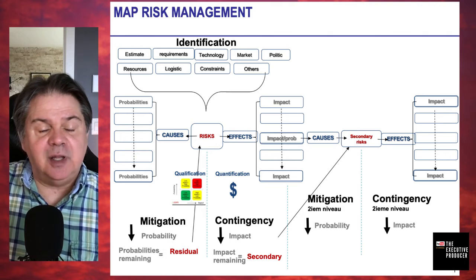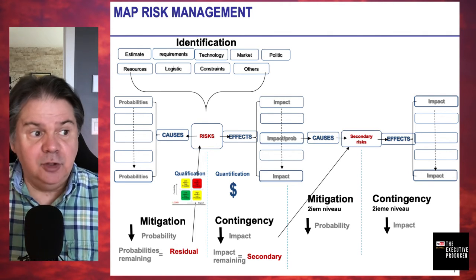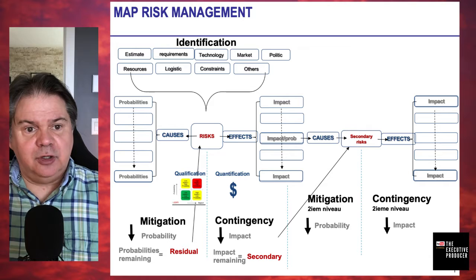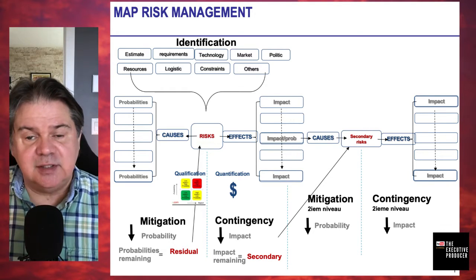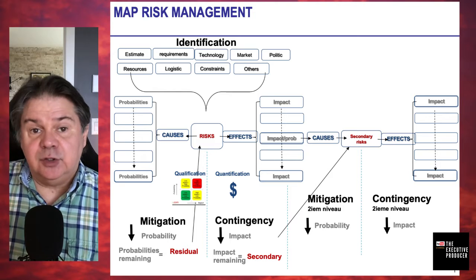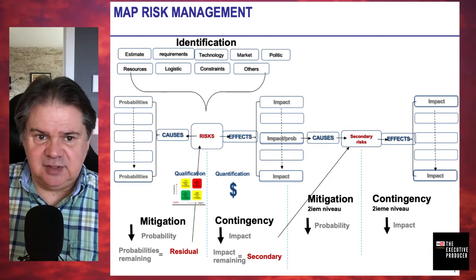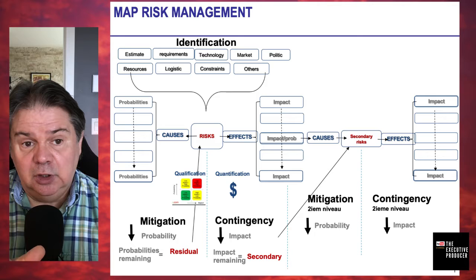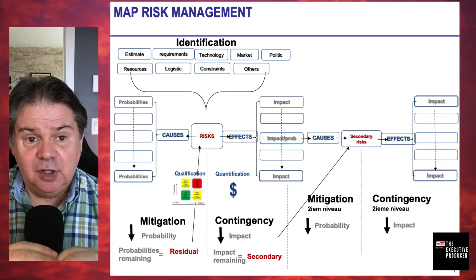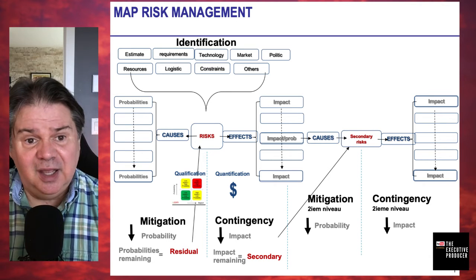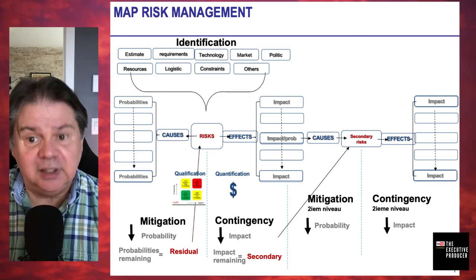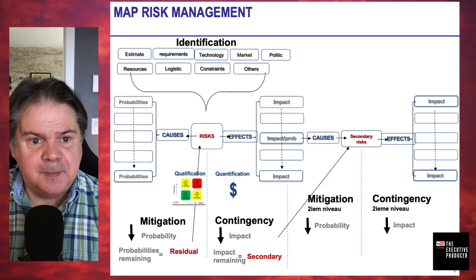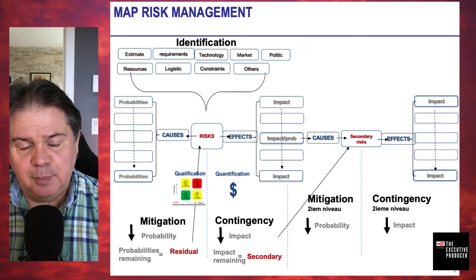For example, let's say you do an outdoor summer event — a stakeholder might ask what happens if it rains. If you haven't considered that, your confidence drops fast. But it doesn't mean that because you identify a risk you will necessarily deal with it. In certain cases you're going to decide: we know it's there, we'll accept it, and if it happens and turns into an issue we'll deal with it. That's also a valid game plan.